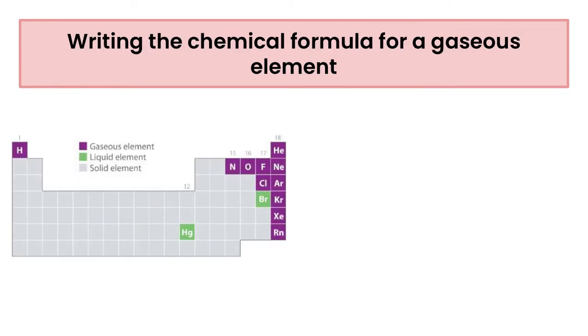Now let's get into writing chemical formulas for gaseous elements. We do have to remember that some of these are diatomic, and so diatomic literally means two and atomic means atoms.